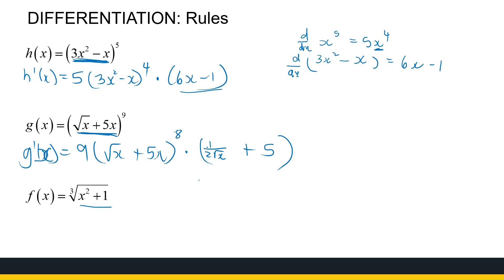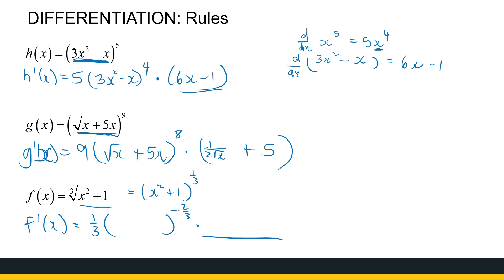The last example is the cube root of x² + 1, which can be written as (x² + 1) to the power of one-third. The chain rule gives: one-third times 'that thing' to the power of negative two-thirds, times the derivative of that thing. The inside is x² + 1 and its derivative is 2x. That is the chain rule.